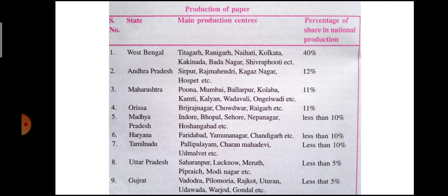Other states with paper production below 10% include Haryana with centers at Faridabad, Yamunanagar, and Chandigarh; Tamil Nadu with Pallipalayam, Charan, Mahadevi, and Udamalpet; Uttar Pradesh with Saharanpur, Lucknow, Meerut, Pipraich, and Modinagar; and Gujarat with Valsad, Bilimora, Rajkot, Udhna, Vapi, and Gondal. UP and Gujarat together contribute less than 5% of production.